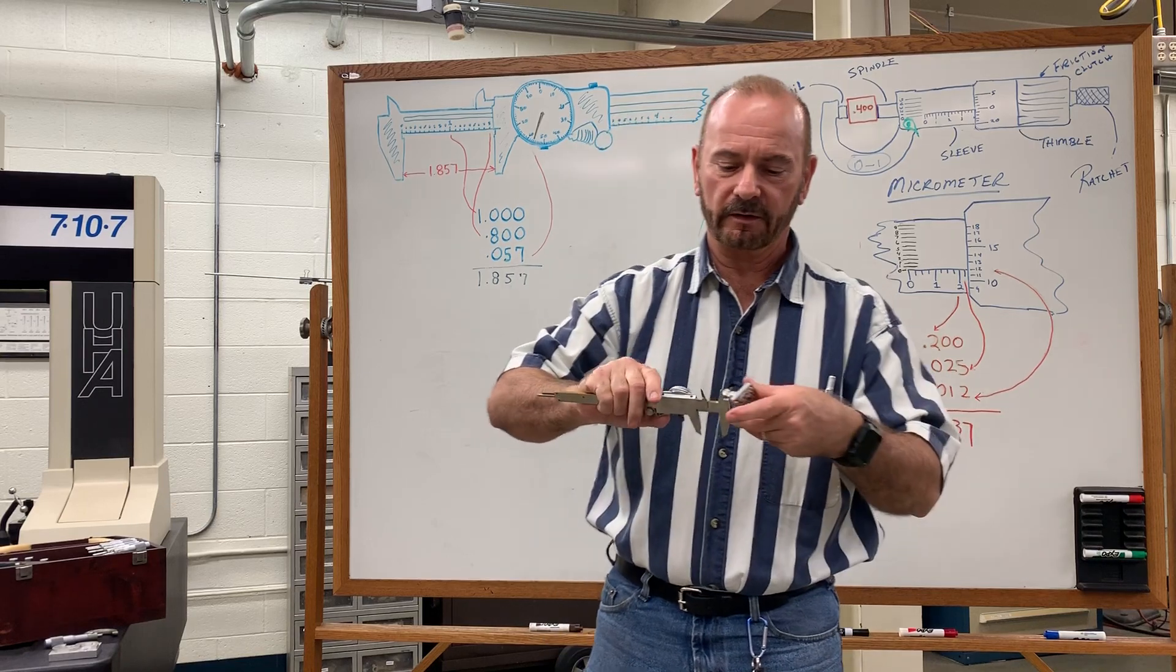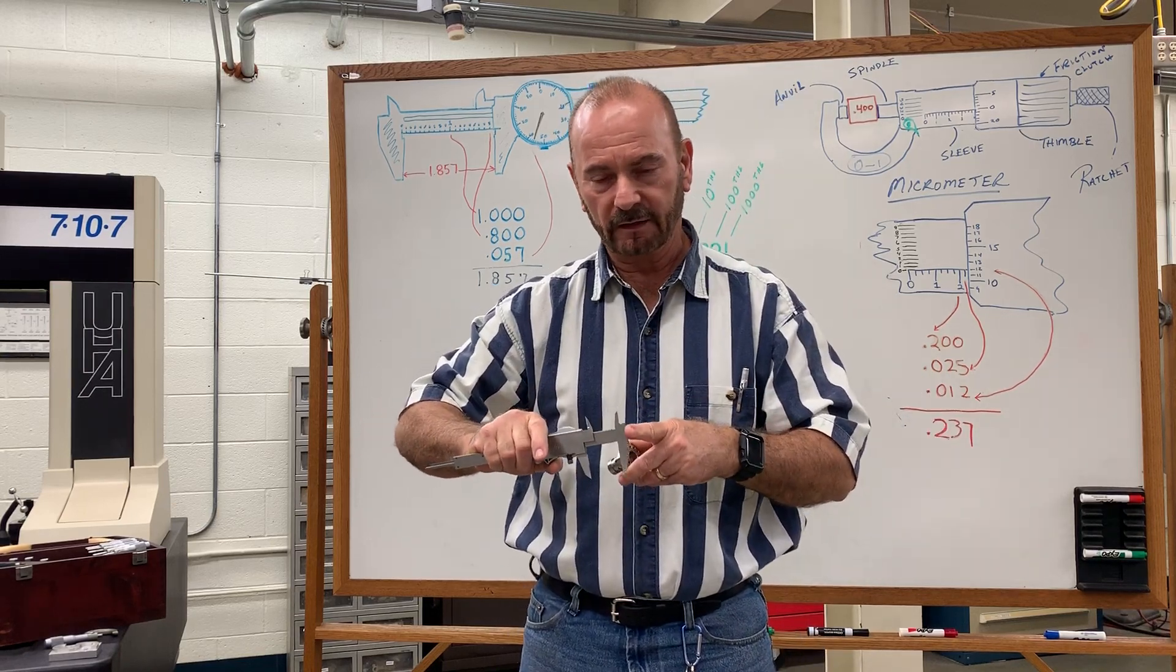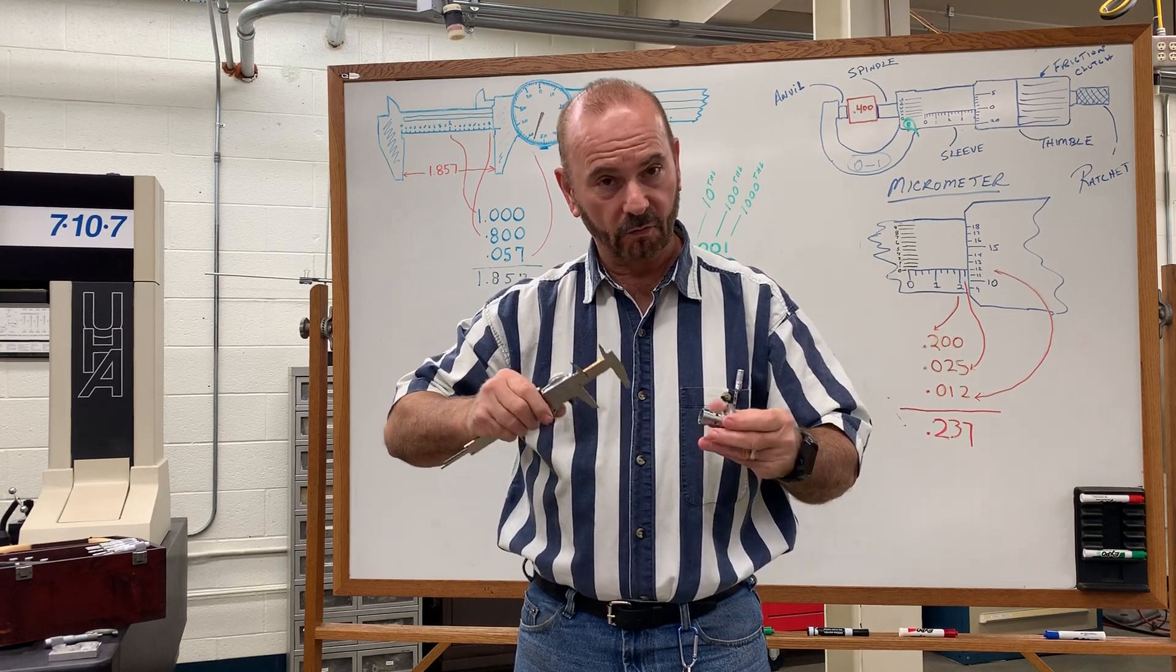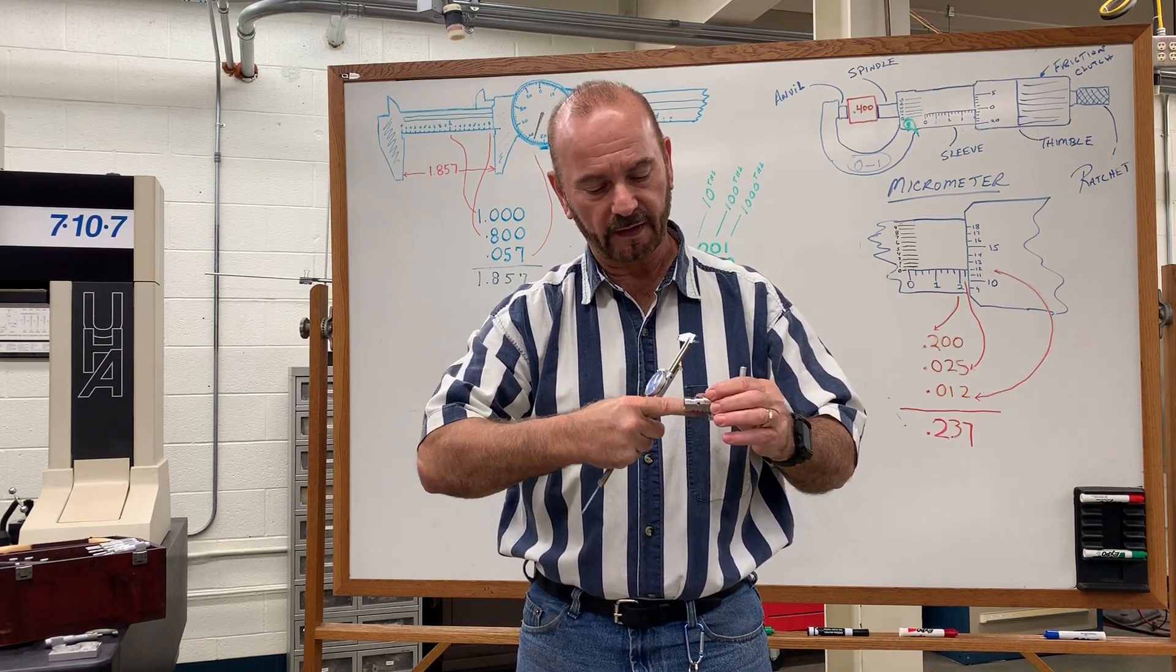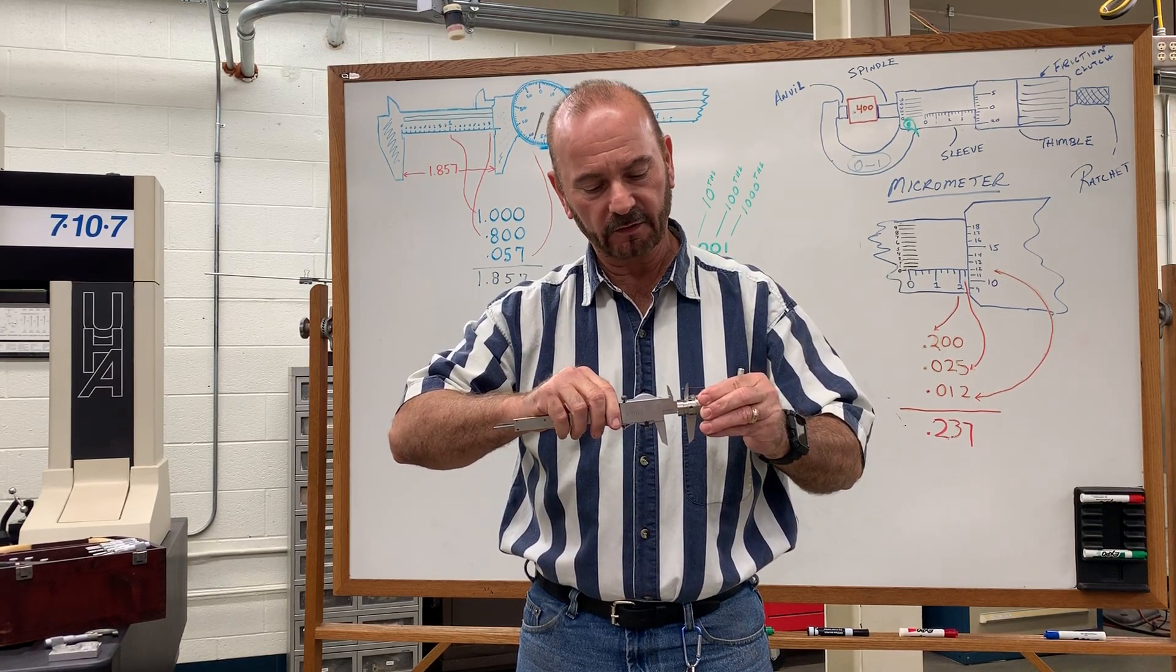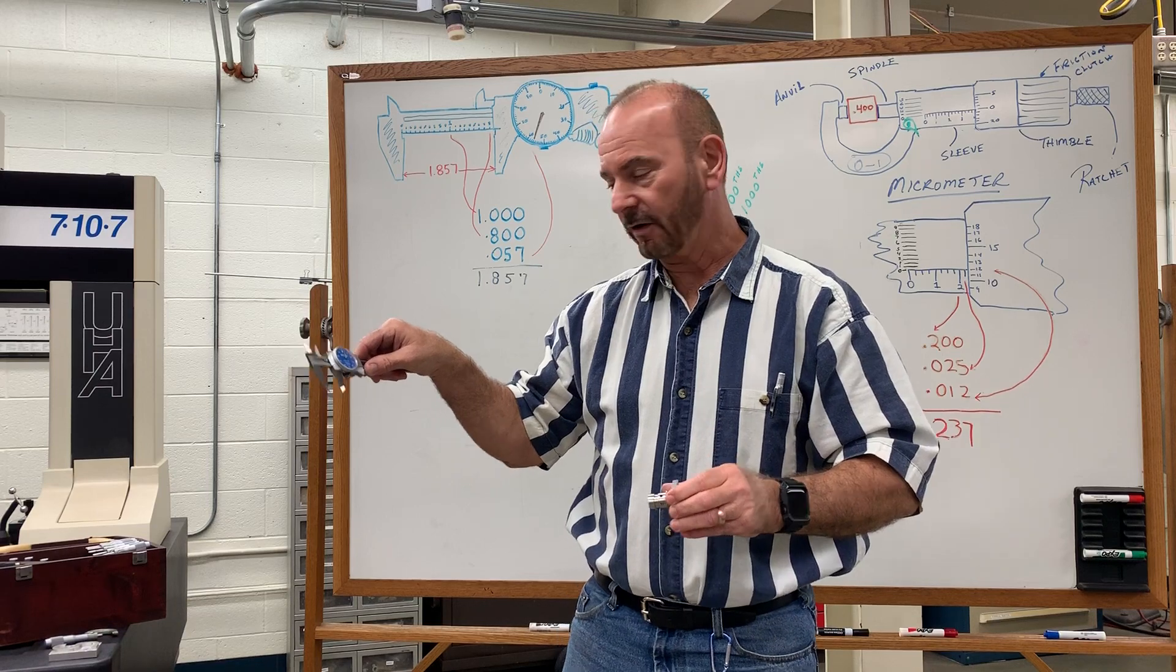There's even a fourth way to measure depth and that is using the face of the caliper here, the end of it, and then the end of the moving jaw here, which are ground flat. I have this shoulder on the outside of the part that I'm going to place the caliper on and then come in this way and read the caliper like so.